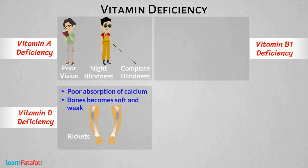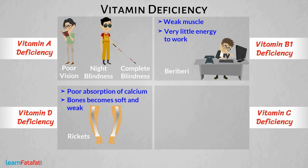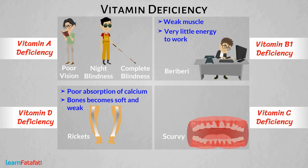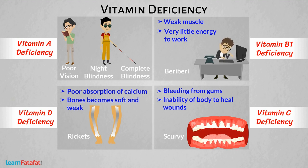Deficiency of vitamin B1 causes beriberi, a disease which causes weak muscles and very little energy to work. Vitamin C deficiency causes scurvy, a disease in which there is bleeding from the gums and inability of the body to heal wounds in time, which causes loss of blood and other diseases.